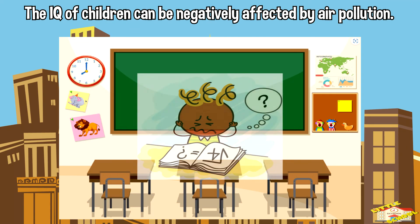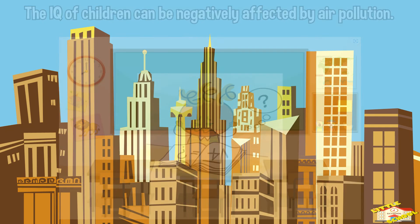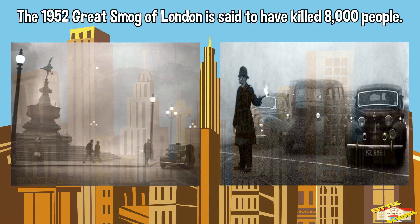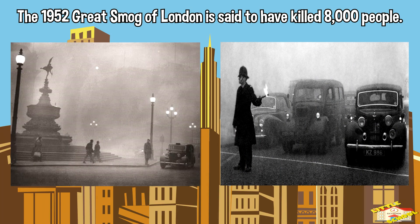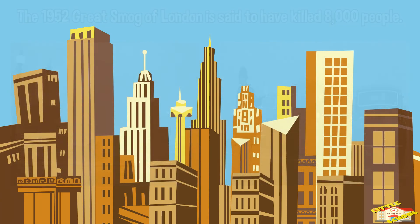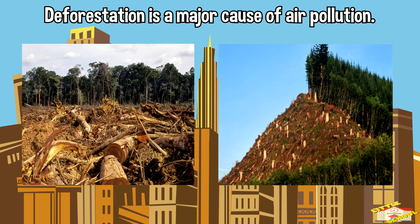The IQ of children can be negatively affected by air pollution. The 1952 Great Smog of London is said to have killed 8,000 people. Deforestation is a major cause of air pollution.